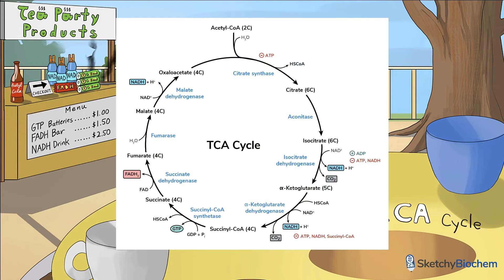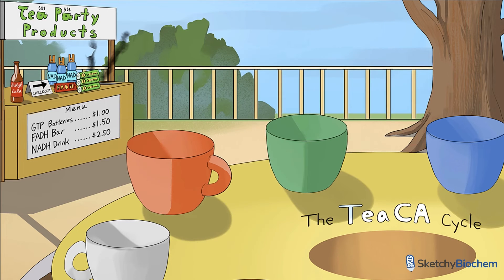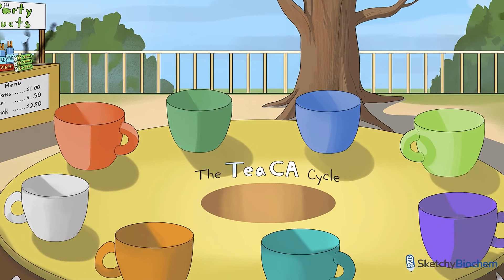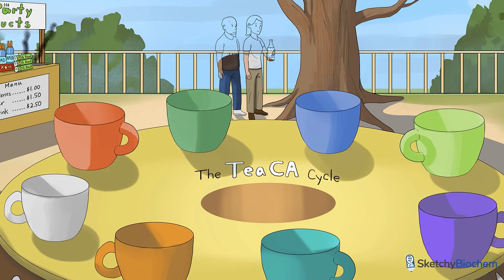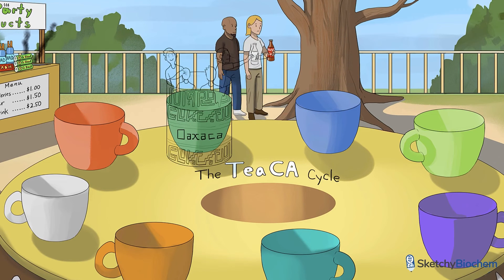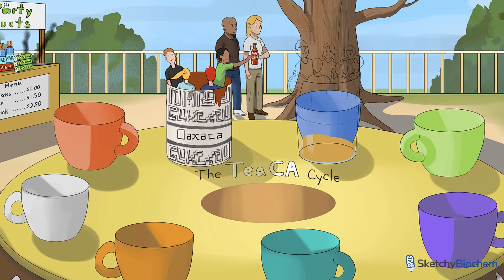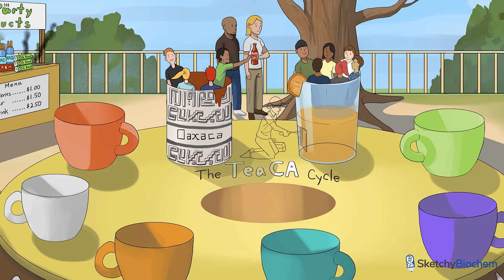Now let's talk about each step in the TCA cycle. The best way to remember each step is to count the number of carbons. In this sketch, we'll use people to represent the number of carbons. In step 1, citrate synthase combines 2-carbon acetyl-CoA and 4-carbon oxaloacetate to make 6-carbon citrate.